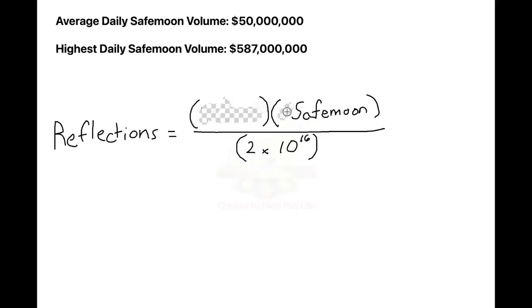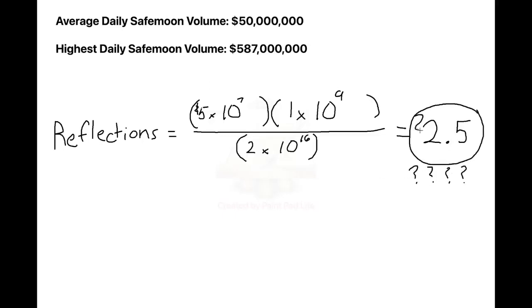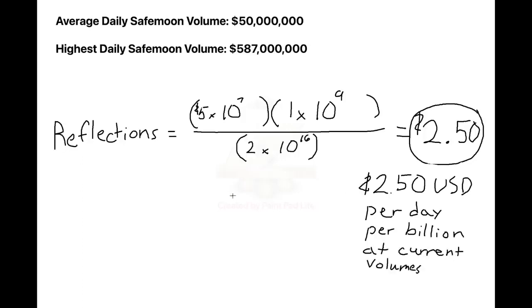So the standard volume we've seen lately is around 50 million dollars daily. And to calculate what a person with 1 billion tokens receives from this 50 million dollars, let's just substitute it into our equation. So we put in 50 million for volume and 1 billion for SafeMoon, and that gives us a neat answer of 2.5. What is this number? This is the value in U.S. dollars of your daily reflections.